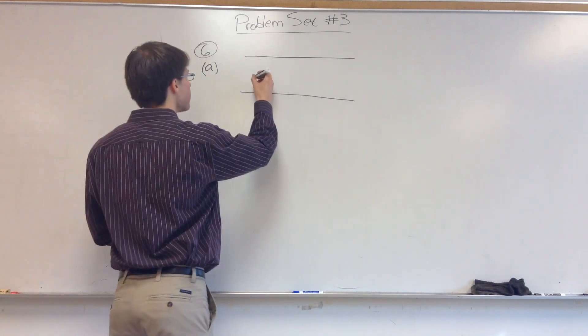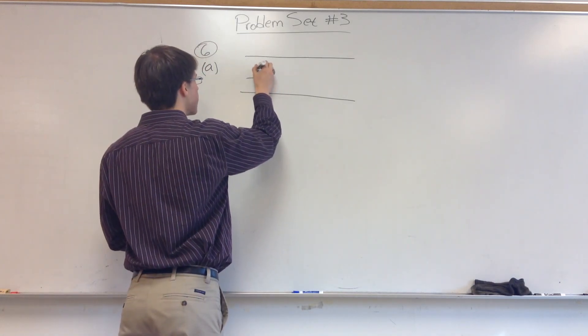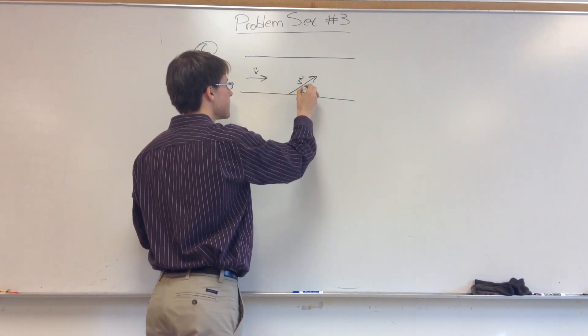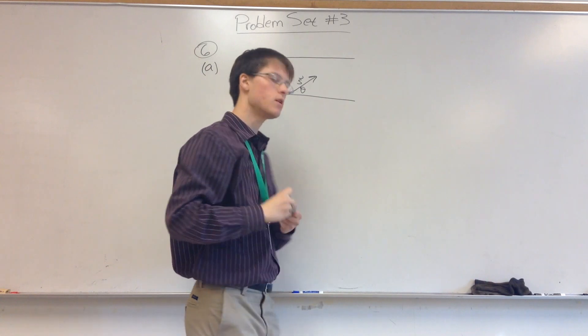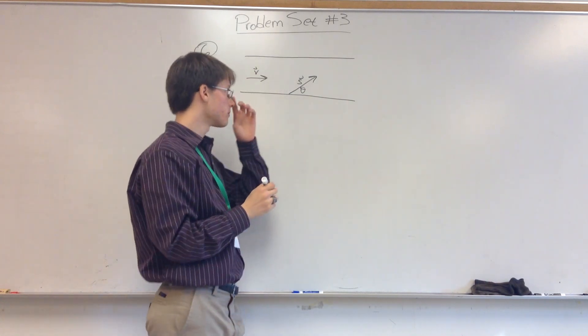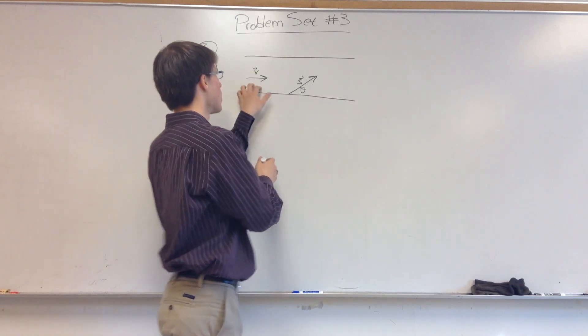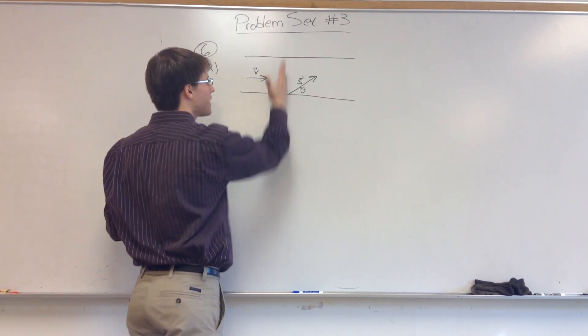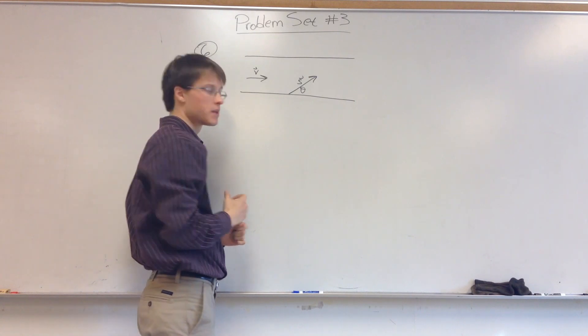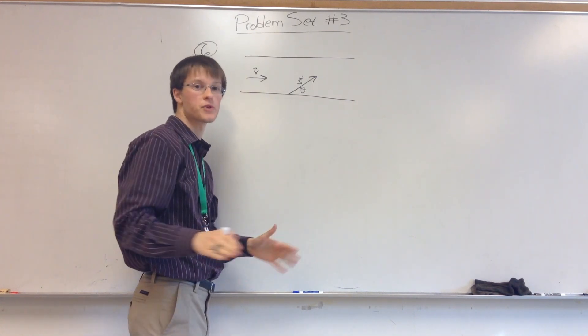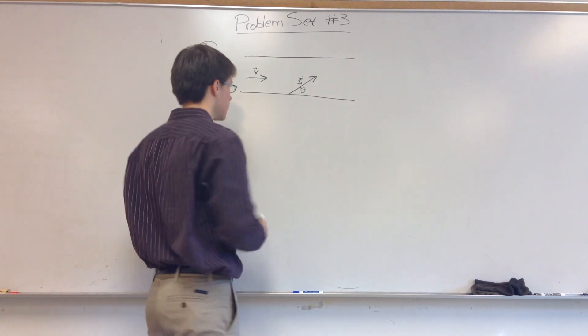If we have our velocity of our current traveling that way, and the velocity of the swimmer S at an angle of theta, we remember from the problem we did in class with the lake that the only thing we're interested in is the y velocity of the swimmer. The current does not contribute at all to the y velocity, right?